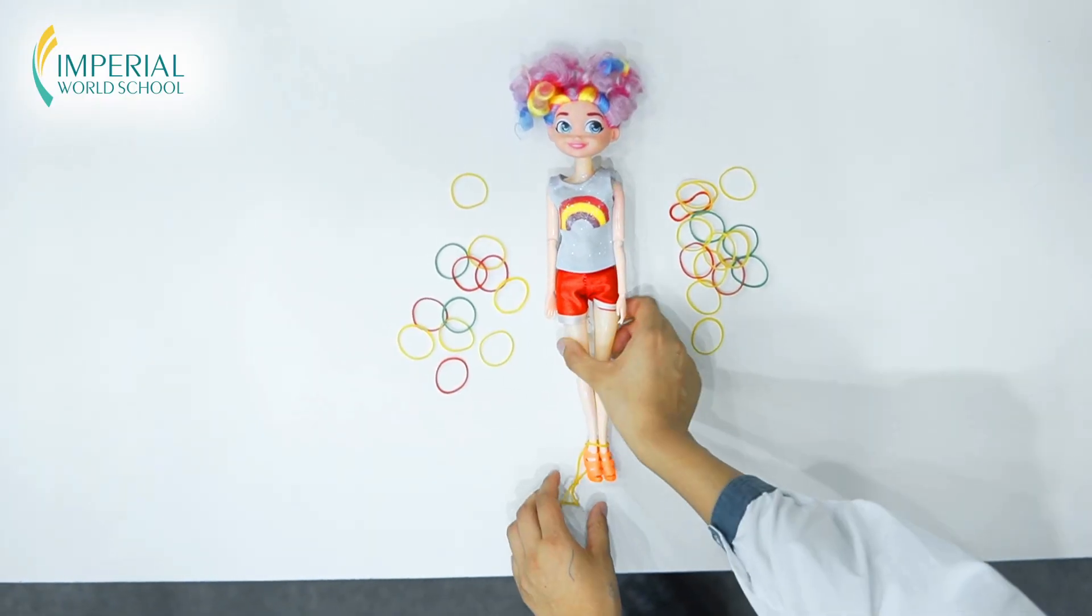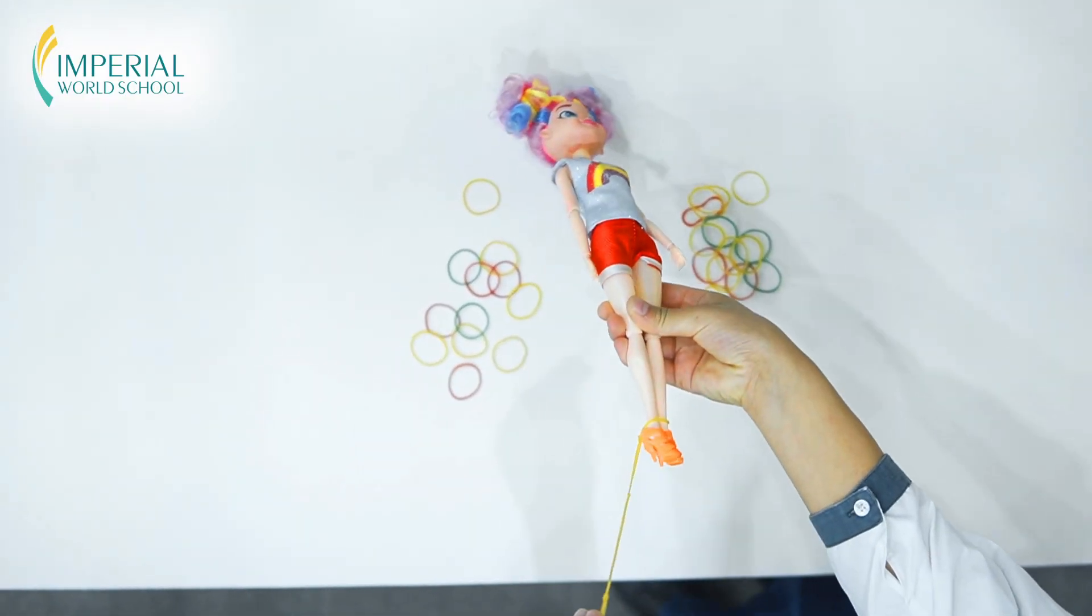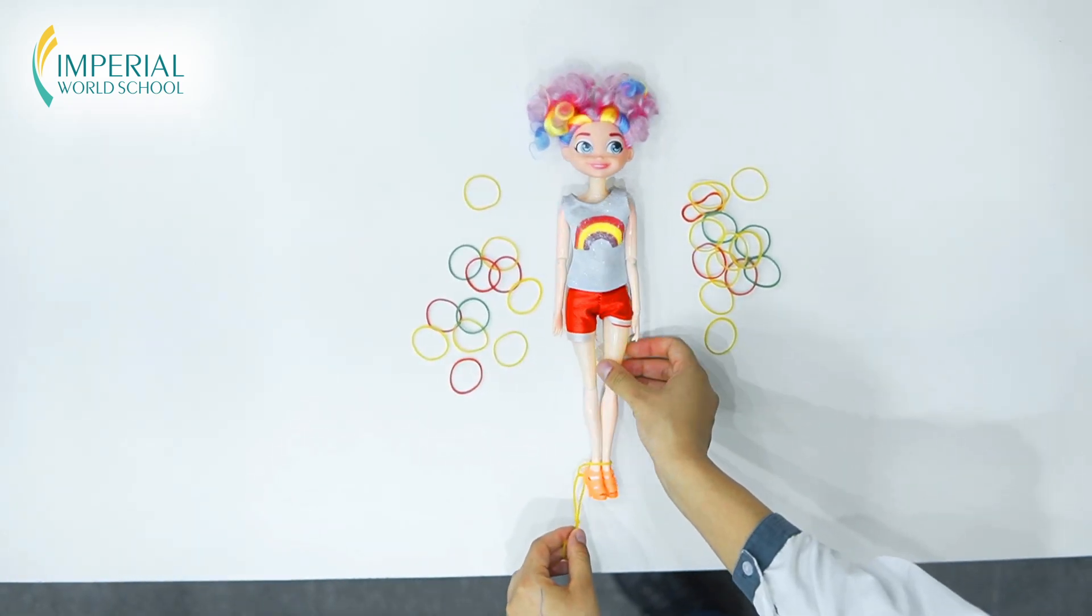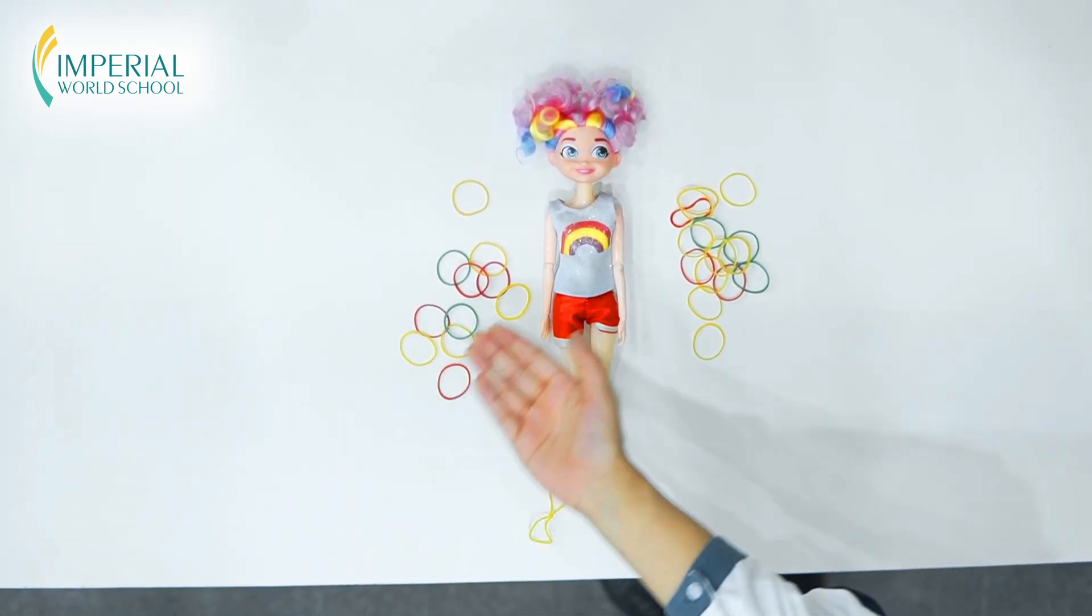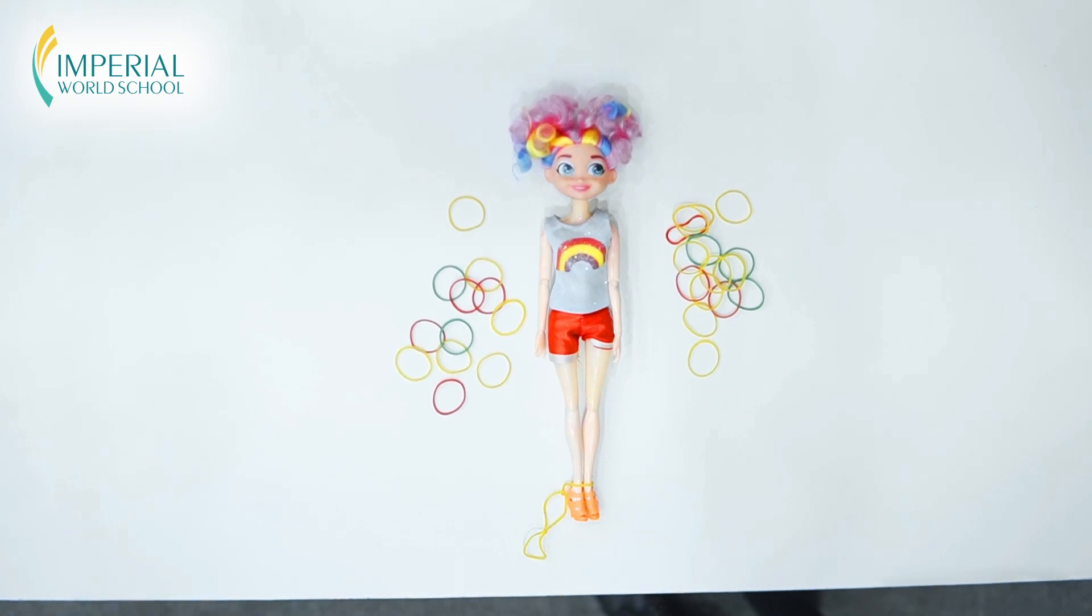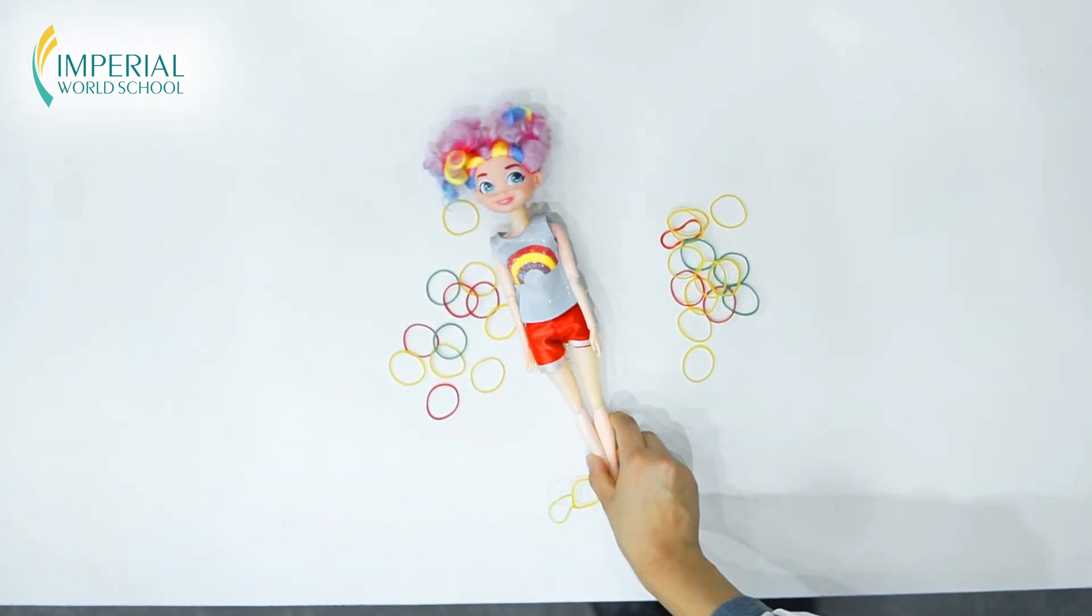Here's how it works. We take a Barbie doll and create a bungee cord for her using rubber bands. Our goal is to figure out how many rubber bands we need to give Barbie the perfect thrilling jump where she gets as close to the ground as possible without actually hitting her.